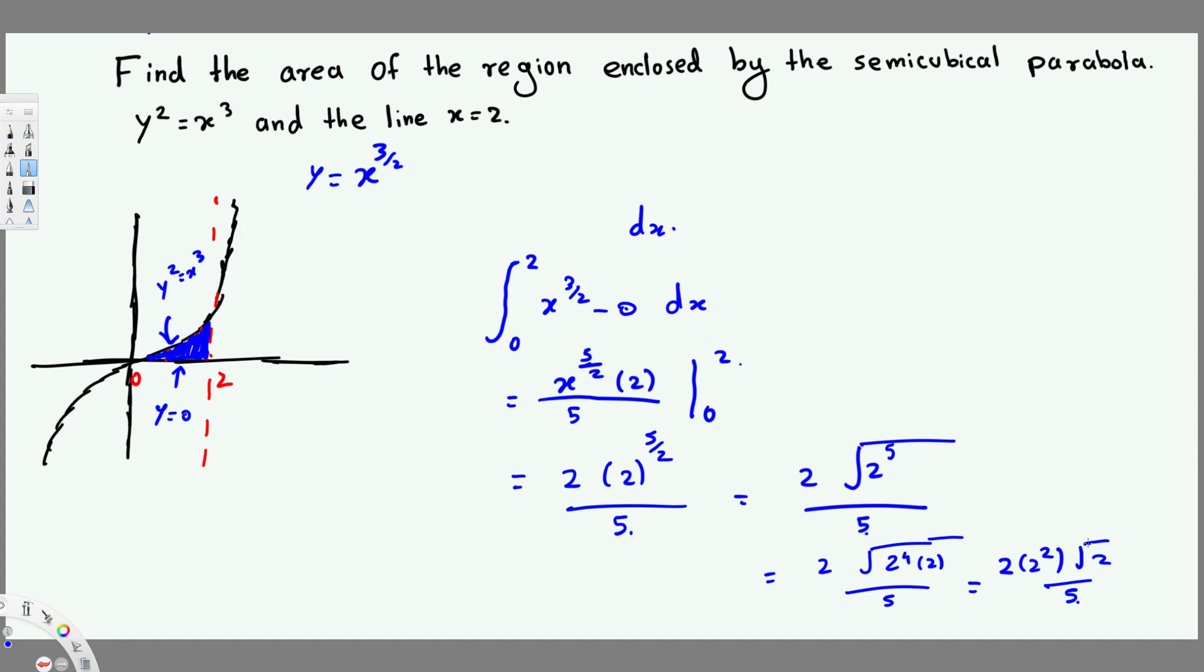So this is the same as 4 times 2, that's going to be 8 over 5 √2, so the final answer is (8√2)/5, and that's going to be the area of this shared region. I hope you guys find this video helpful, thanks for watching.